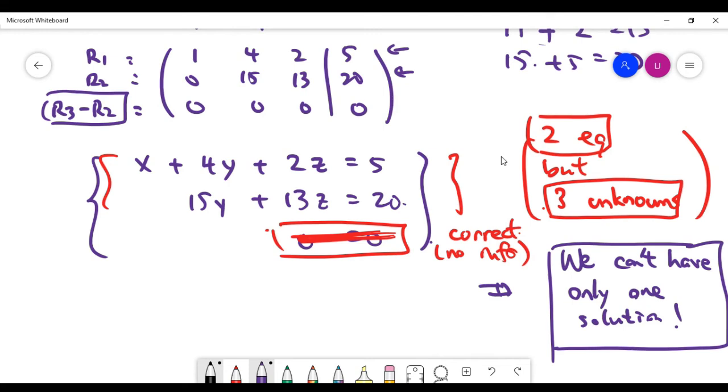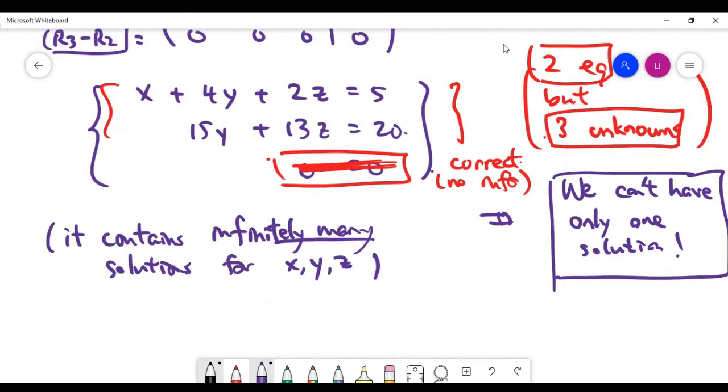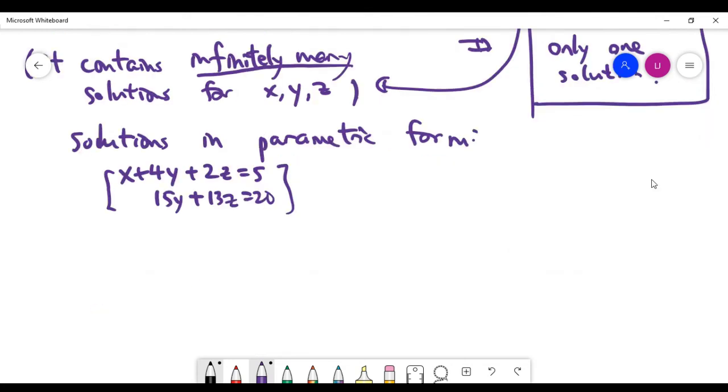So let me write the notes here. We can't have exactly one set of solutions for x, y, z. And what you need to do now in this case is we kind of know that we actually have infinitely many solutions, simply because of the fact that we don't have enough equations to determine the number of unknowns. And it doesn't matter, we can still write our answer in a better way by using a parametric form.